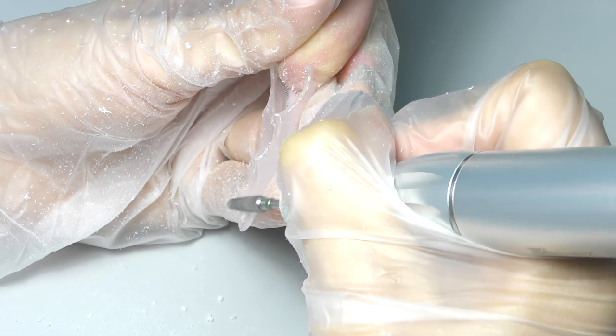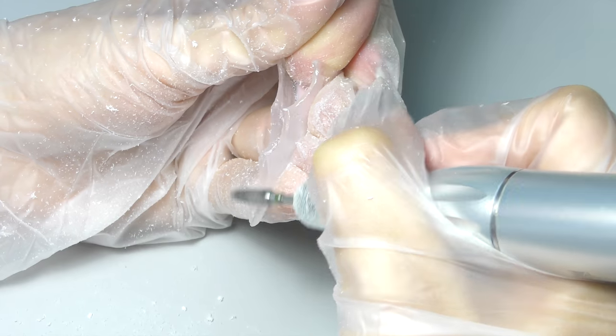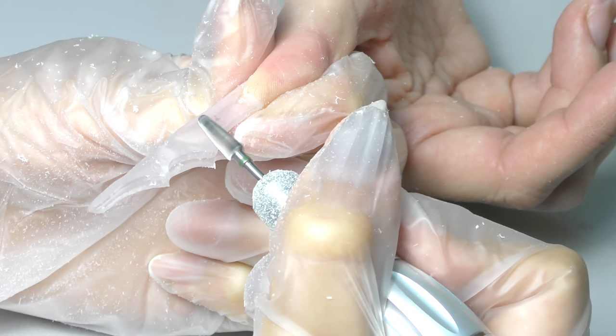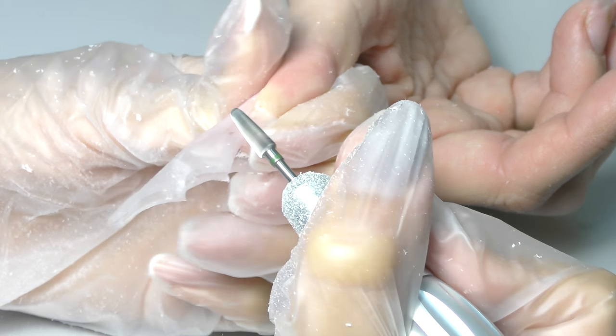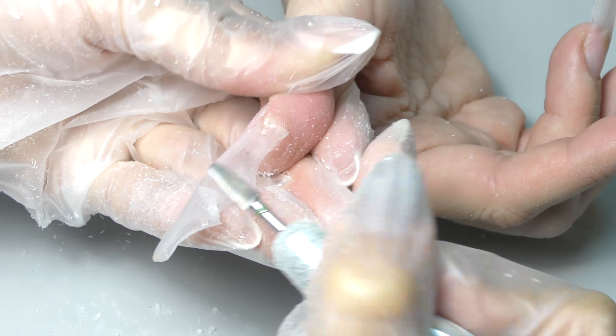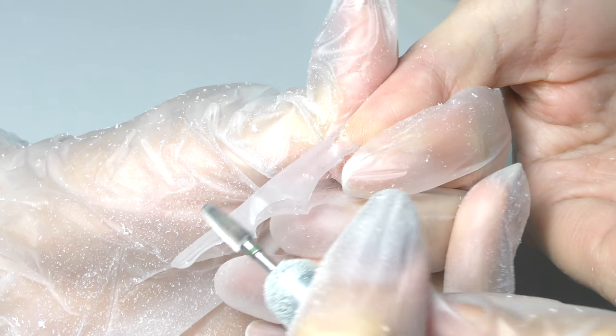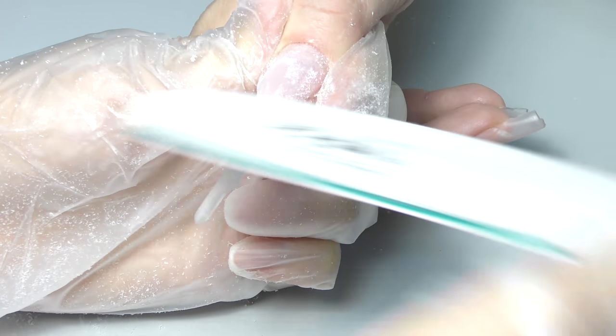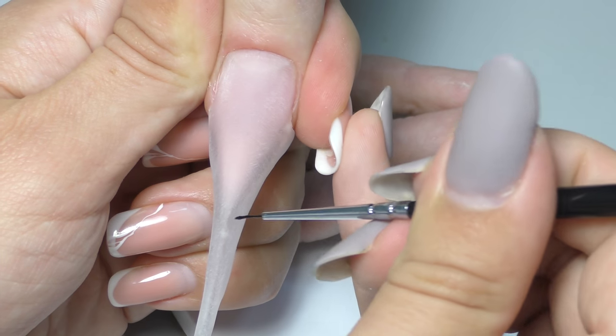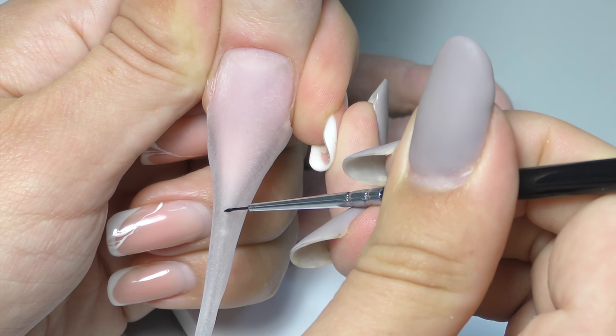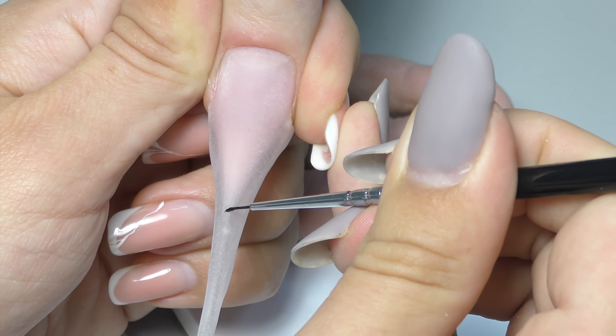And once you see that one side is too thick then you can turn the nail around and fix this thickness. Our goal is to have the same thickness on both sides. Once you achieved it then you can work on the surface. I file the cuticle area with 180 file, take off the dust, and then it's time to do the design.